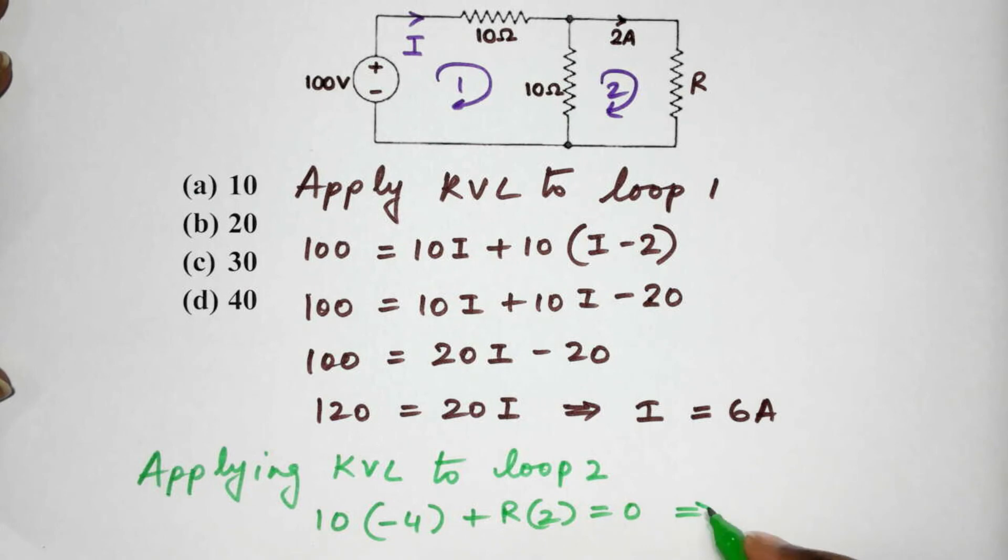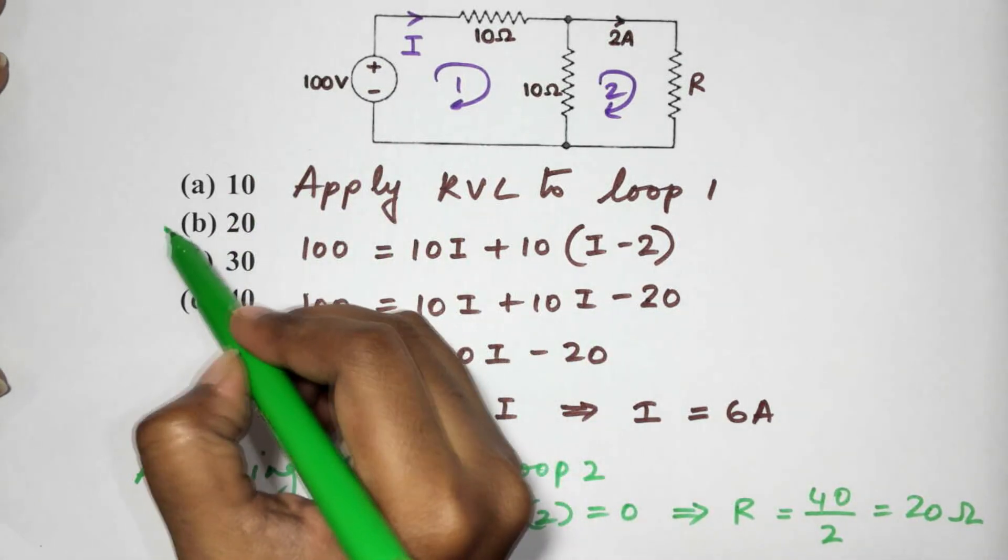you will find the value of R to be 40 by 2 which is 20 ohms and this matches option B.